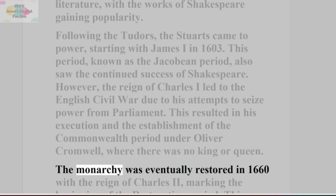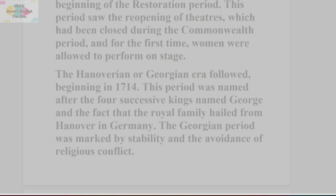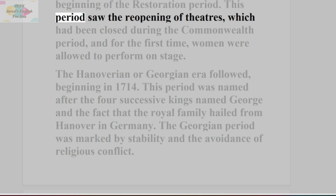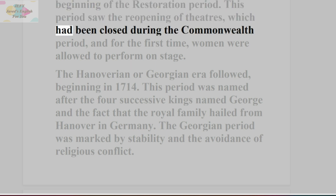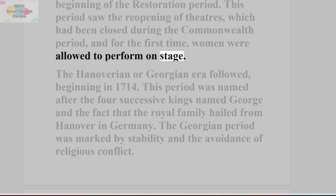The monarchy was eventually restored in 1660 with the reign of Charles II, marking the beginning of the Restoration period. This period saw the reopening of theatres, which had been closed during the Commonwealth period, and for the first time, women were allowed to perform on stage.